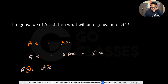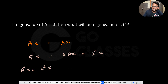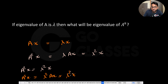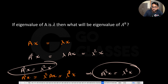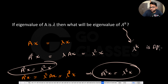From A²x = λ²x, x can be treated as the eigenvector and λ² is the eigenvalue. Multiplying by A one more time gives A³x = λ²(Ax) = λ³x. So A³x = λ³x, meaning λ³ is the eigenvalue. By induction, the eigenvalue of A^k is λ^k, and x is the eigenvector.